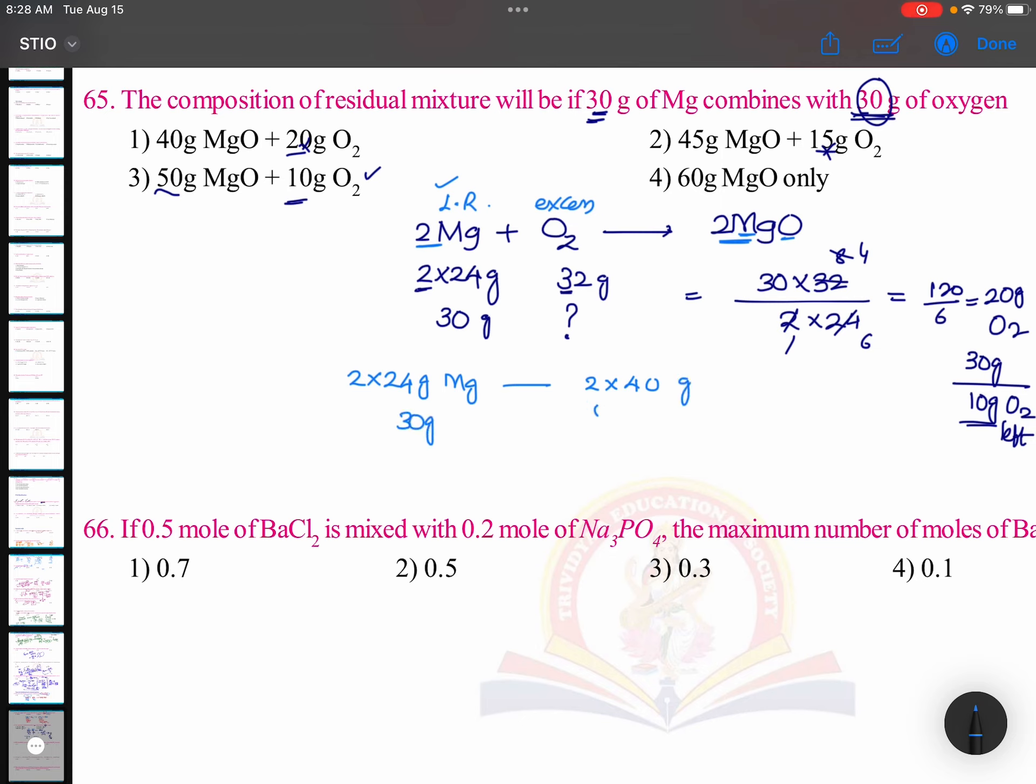30 grams gives so much: 30 into 2 into 40 by 2 into 24. Let it be 30 only, I am not changing this. This is 4, 6, 6, 1, 6, 5, 5, 1, 2, 10 is 50 grams. Correct, 50 grams of magnesium oxide.